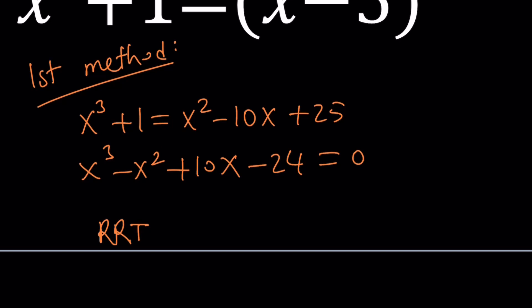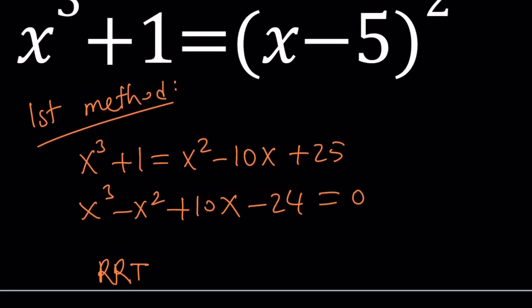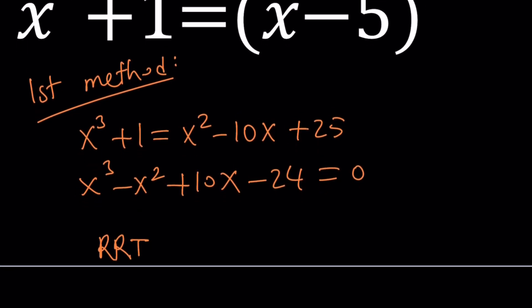then you have to divide factors of the constant by the factors of the leading coefficient and then look at all possibilities. So that's probably going to give you more options to check. So that is rational root theorem.